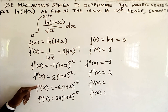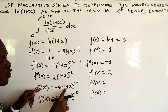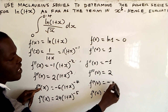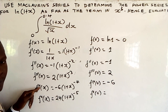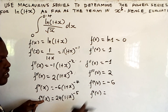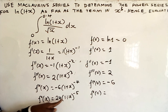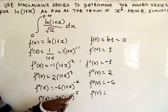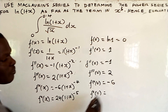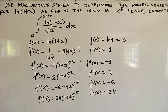For f''''(0): putting x=0 into -6·(1+x)^(-4) gives -6·1 = -6. For the fifth derivative at 0: putting x=0 into 24·(1+x)^(-5) gives 24·1 = 24.